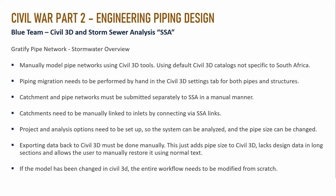The next step is that catchments and pipe networks must be submitted separately into SSA in a manual manner. The pipe networks are sent as an SDM file and the catchment comes in as a LandXML — you need to export both of those elements to SSA separately; there is no one-click option. Then the project and analysis options need to be set up inside SSA itself so the system can be analyzed and pipe sizes can be changed.